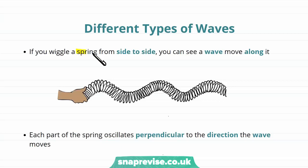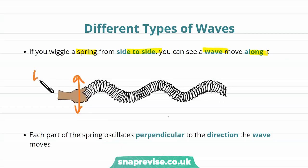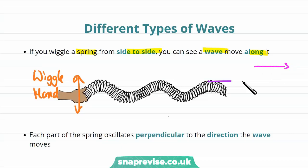Let's imagine wiggling a spring from side to side. When we do this we would be able to see a wave move along it. So we could wiggle the spring side to side by moving our hand — for example side to side or up and down like this. When we do this, the spring doesn't move in this direction, but a wave certainly does. We have a wave that seems to move along in this direction, but each part of the spring is actually just going up and down like this.